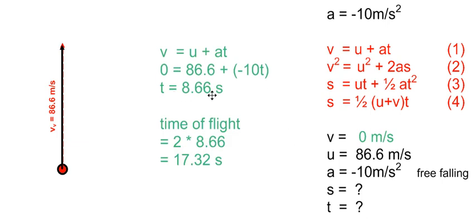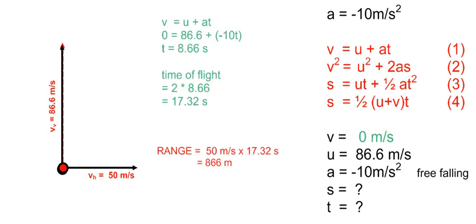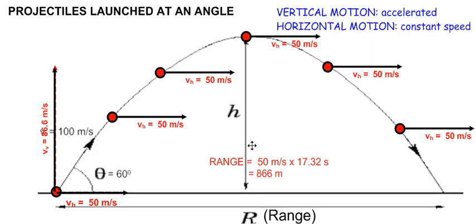As it takes 8.66 seconds to reach maximum height, the total time of flight is 2 times that: 17.32 seconds. During that time, the projectile was also travelling along the horizontal at a constant speed of 50 m per second. As it was in the air for 17.32 seconds travelling at 50 m per second, it travelled a total horizontal distance of 866 m. The range is found by multiplying horizontal speed by the time of flight, which was determined from the vertical velocity components.